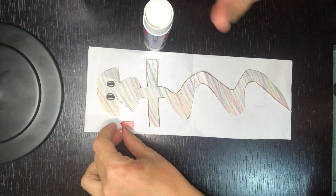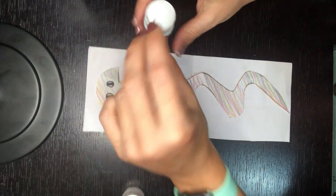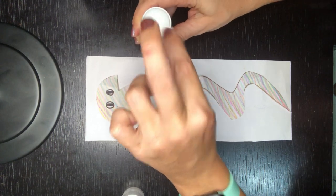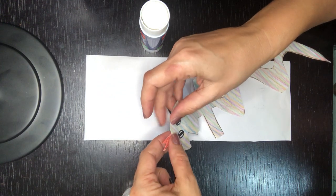The first thing we're going to do is glue on the tongue. The tongue you want to put the glue here on the painted side. A little bit of glue and then this will go underneath the mouth like so.